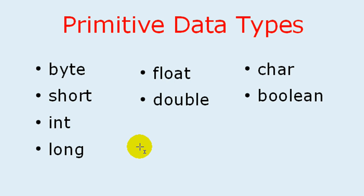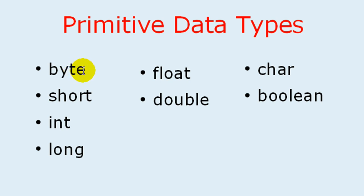Java provides many primitive data types. These are the placeholders where you can hold values. The first group is whole numbers — here you can't store any fraction, it's a whole, complete number. The examples are: byte, which is the smallest and consists of 8 bits; short, which is 16 bits; int, which is commonly used and can hold values up to 32 bits; and long, which is quite a big number.